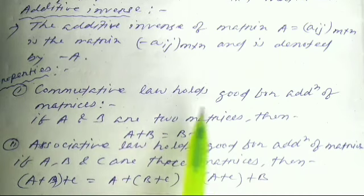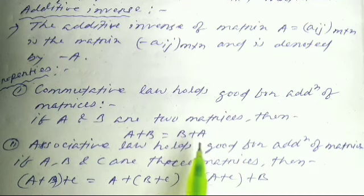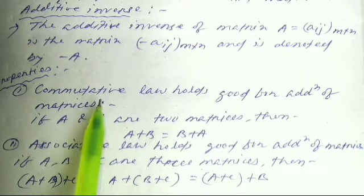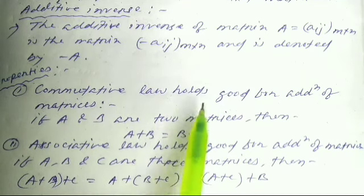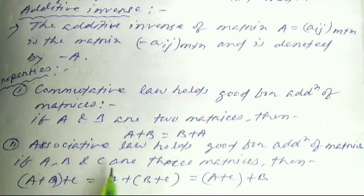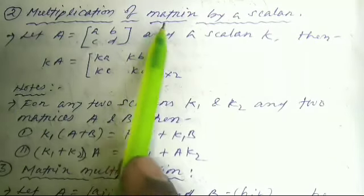The commutative law holds good for addition of matrices, and the associative law holds good for addition of matrices. However, for subtraction, A − B is not equal to B − A, so the commutative law is not satisfied for subtraction.